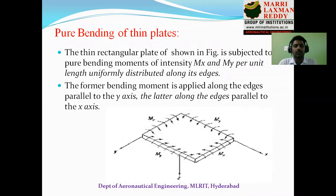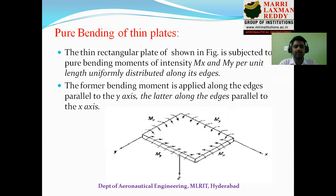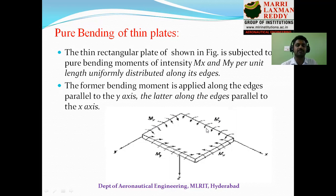A schematic diagram of the thin plate is shown, with x, y, and z axes. The x and y are the major dimensions while the z-axis dimension, which is the thickness, is very small compared to both. Here Mx and My are the two bending moments per unit length — Mx is applied per unit length in the x-plane and My in the y-plane, uniformly distributed along opposite edges.